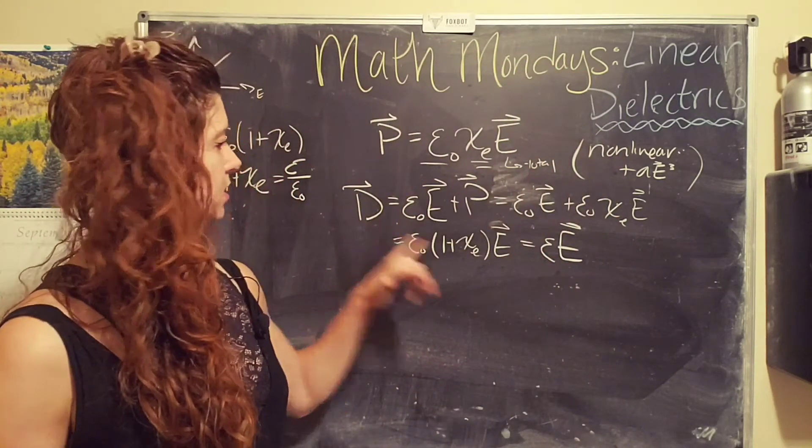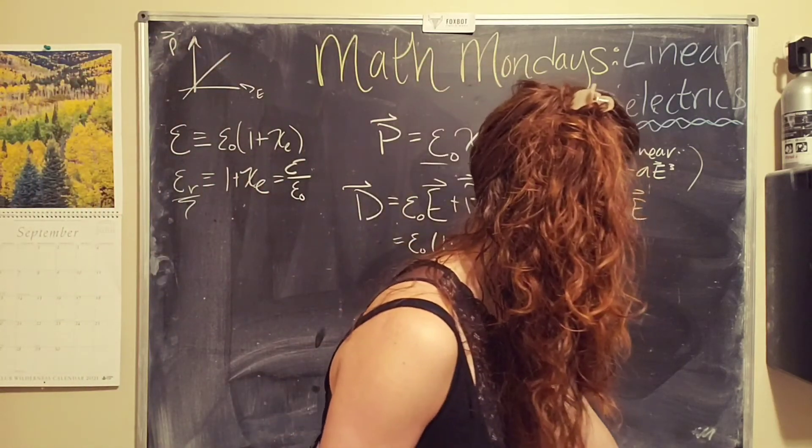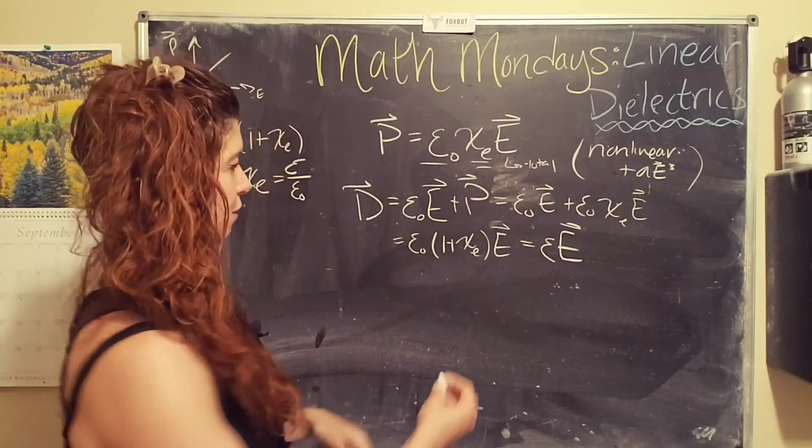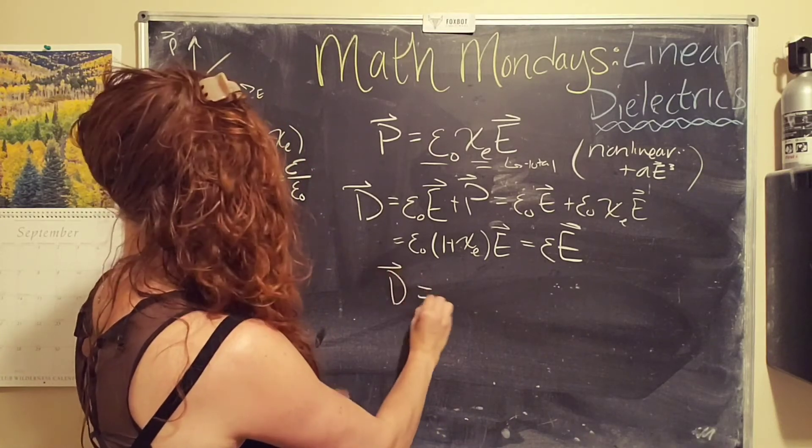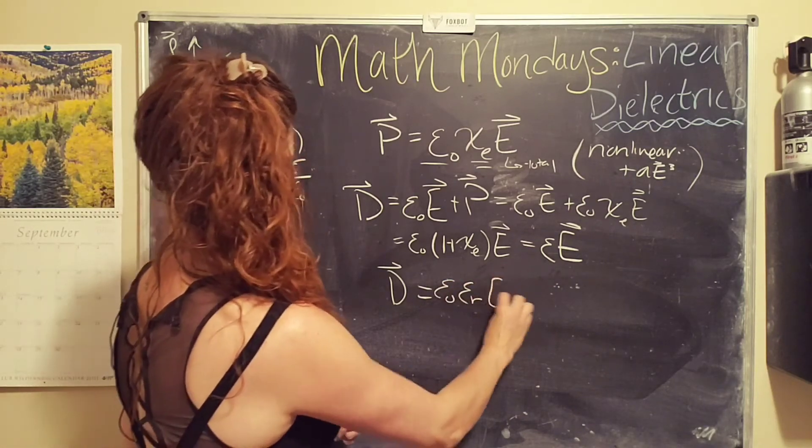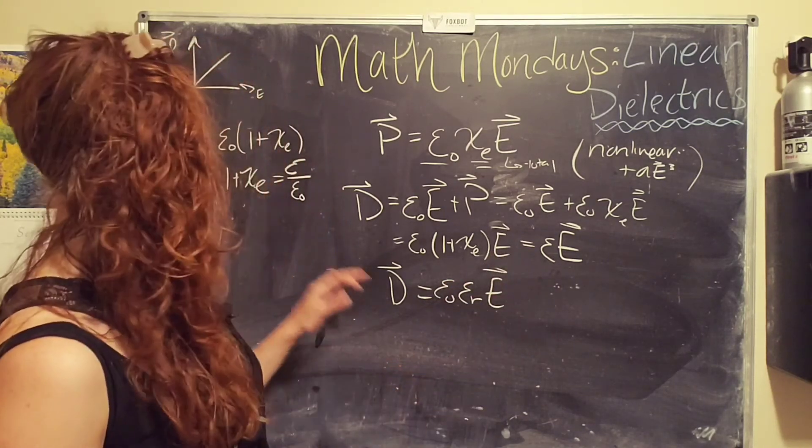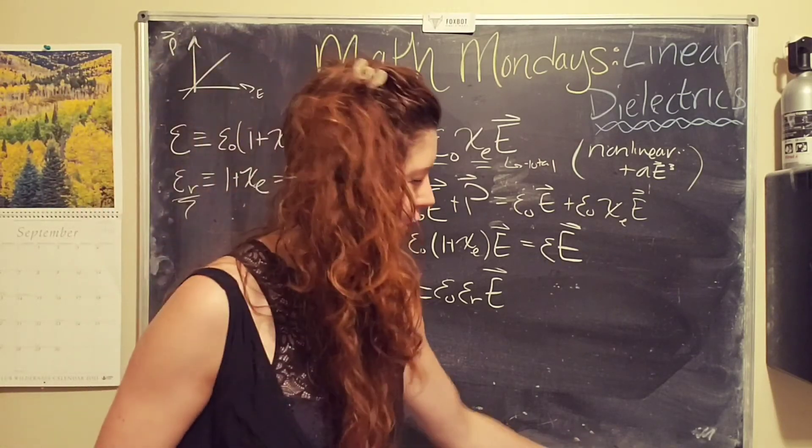Cool. Yeah. So this is the displacement in terms of the permittivity. If we wanted to write it in terms of the relative permittivity, it would just be epsilon naught times the relative permittivity times the electric field. Is that right? Yeah, that's right. Okay, cool. There you go. Check out part two. Yay. Okay.